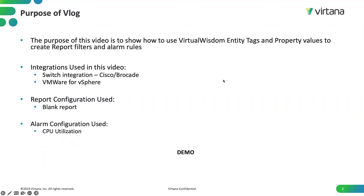For demo purposes, we will be creating a blank report from scratch and adding filters via entity tags or property values associated with that entity. After reviewing the report, we will also create an alarm rule specifically for CPU utilization, filtering it by ESX VMs and OS types used for those VMs. So let's start with the demo.